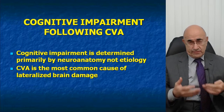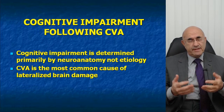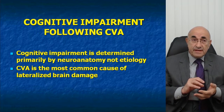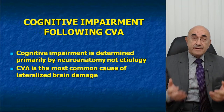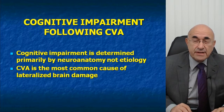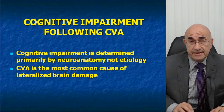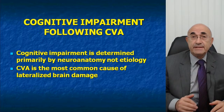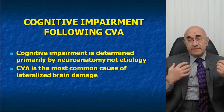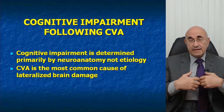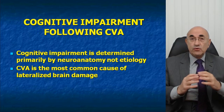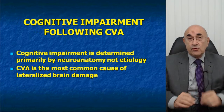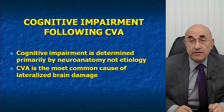CVAs are usually associated with some degree of cognitive impairment, and the nature of that impairment is a function of the anatomy of the CVA. CVA is the most common cause of lateralized brain damage, the reason being that the distribution of the middle cerebral artery is the most common territory for CVAs to occur. By definition, the middle cerebral artery provides blood supply for the cortical convexity on one side or the other — there are two of them.